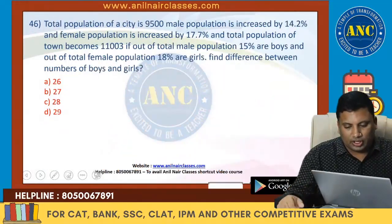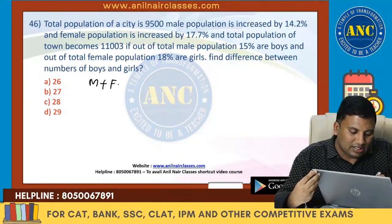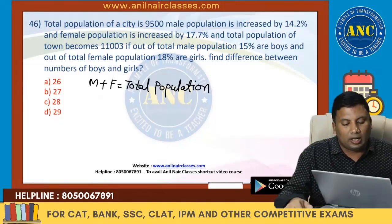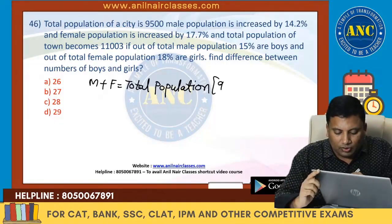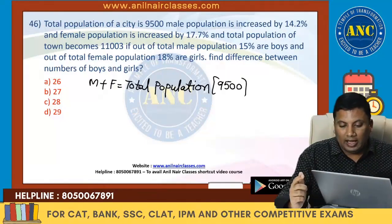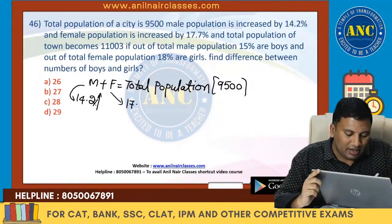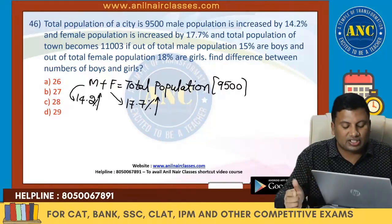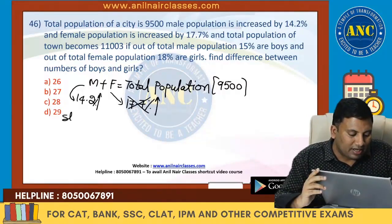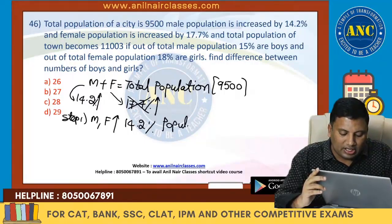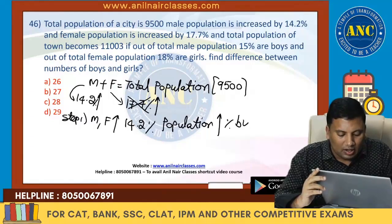Let us do one more question. Male plus female equals total population. Total population of a city is 9,500. Male population increased by 14.2%, female population increased by 17.7%. Ignore the 17.7% first. If both male and female increase by 14.2%, population also increases by 14.2%.